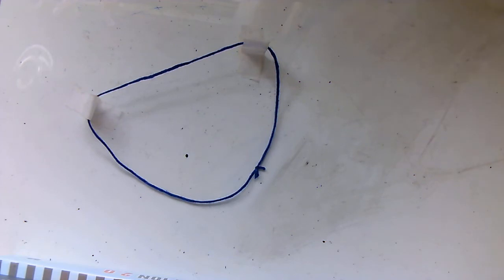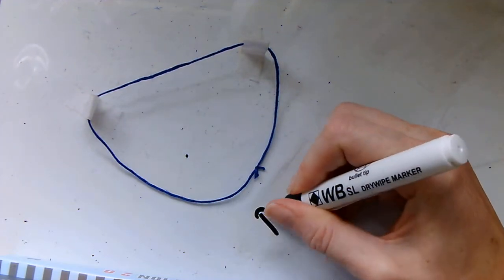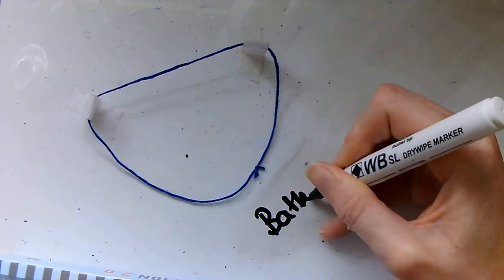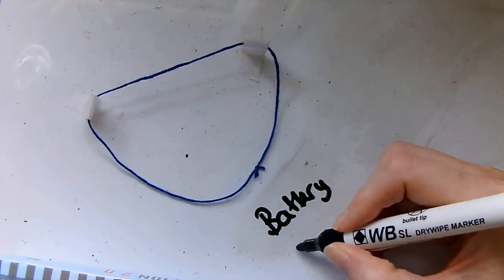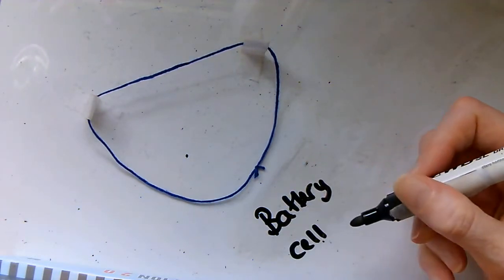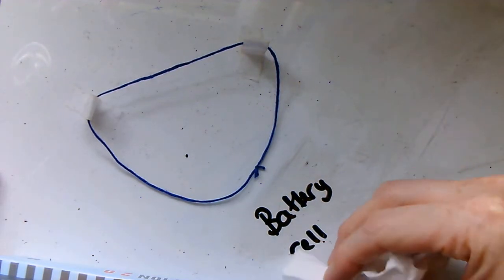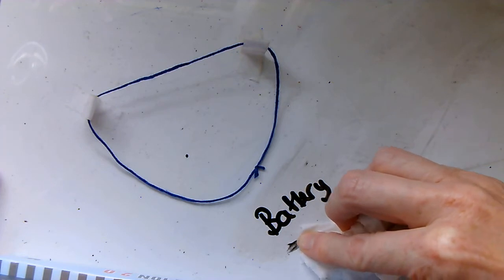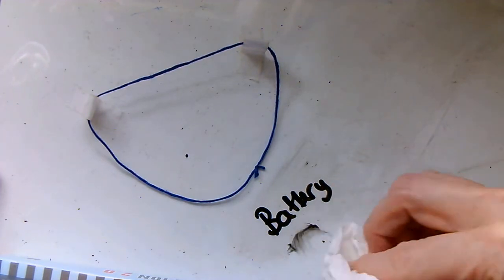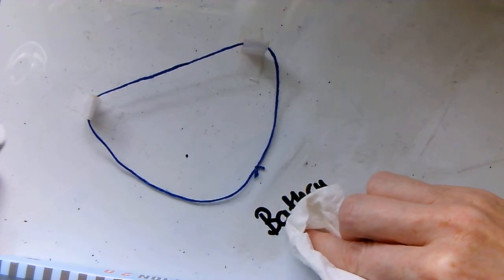Now, because I'm the teacher, I'm going to be boss. So I am going to be the battery, or I could be a cell. A cell is just an individual unit, and a battery is a combination of cells. I'm going to stick with the word battery for now, because that's the word you're going to be more familiar with.